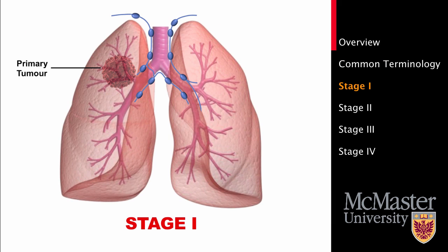Stage 1 lung cancer is the earliest stage at which most lung cancers can be diagnosed, and the stage where long-term survival is the longest. At this point, the cancer is localized, meaning it is only located in the lungs and has not yet spread to any lymph nodes. There are two types of stage 1 lung cancer.